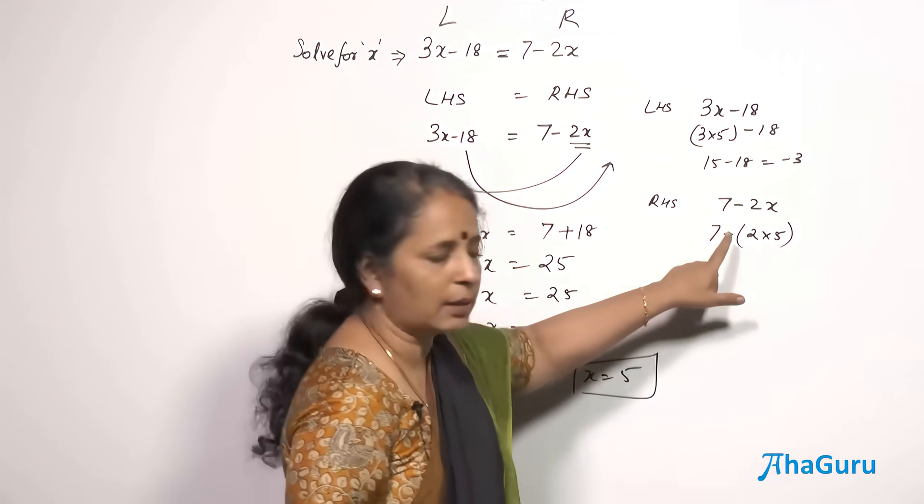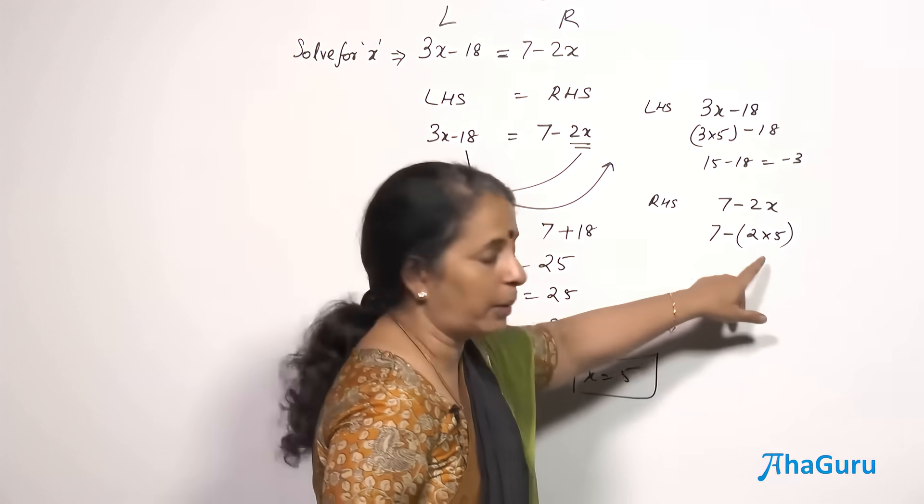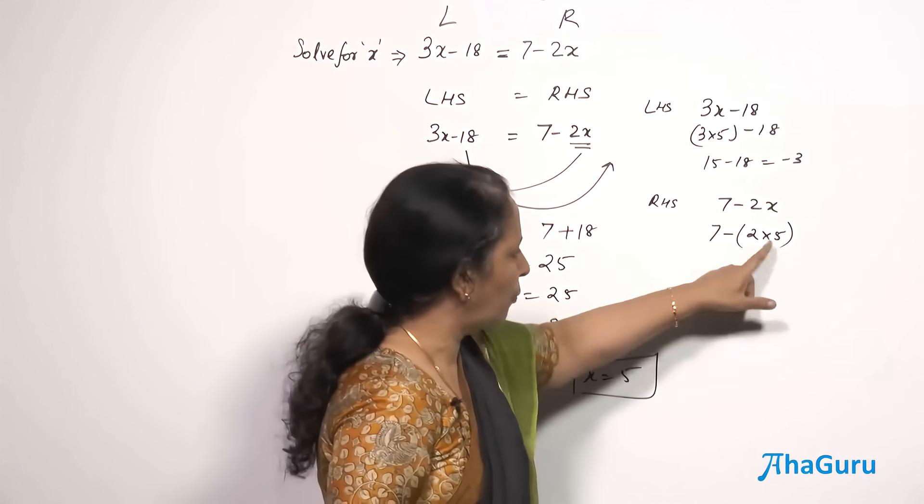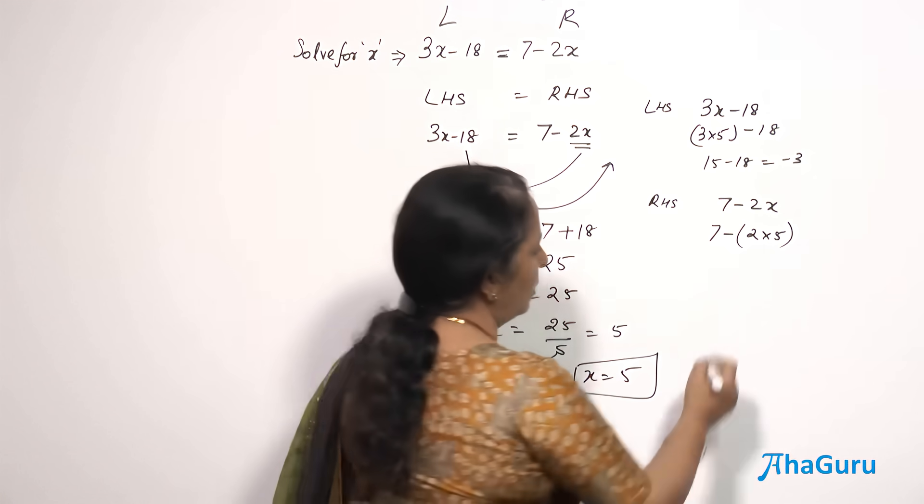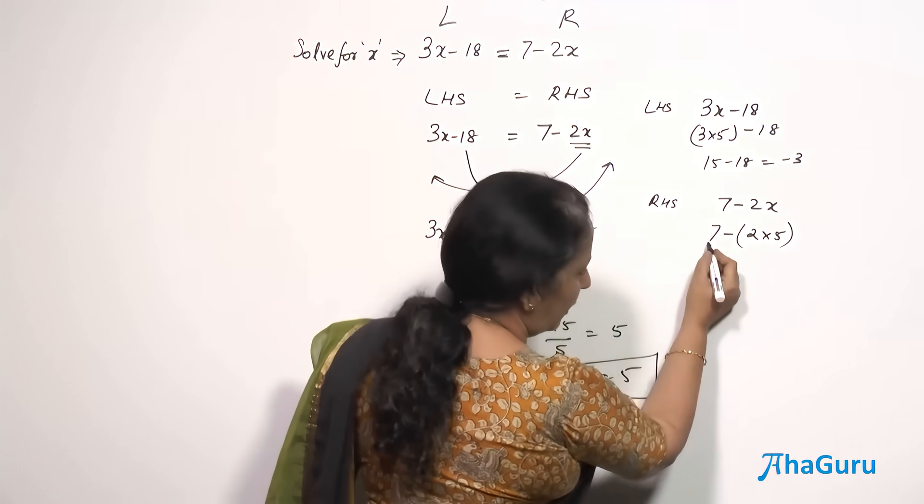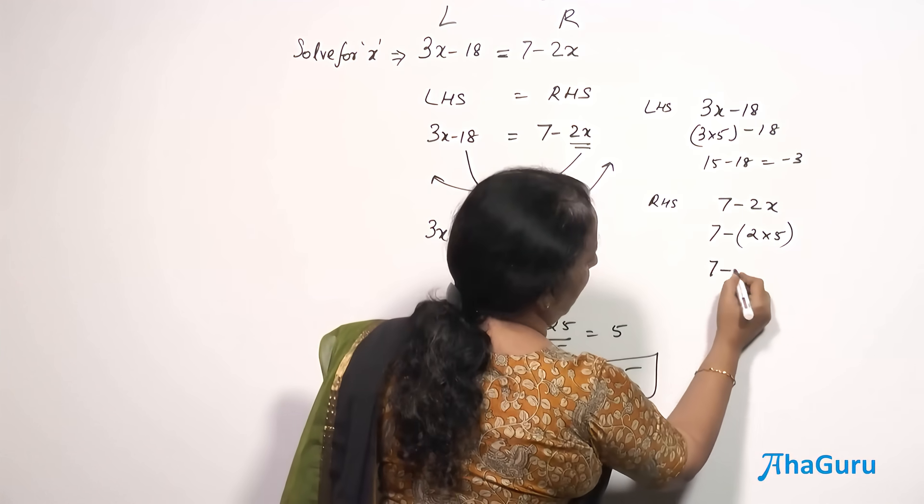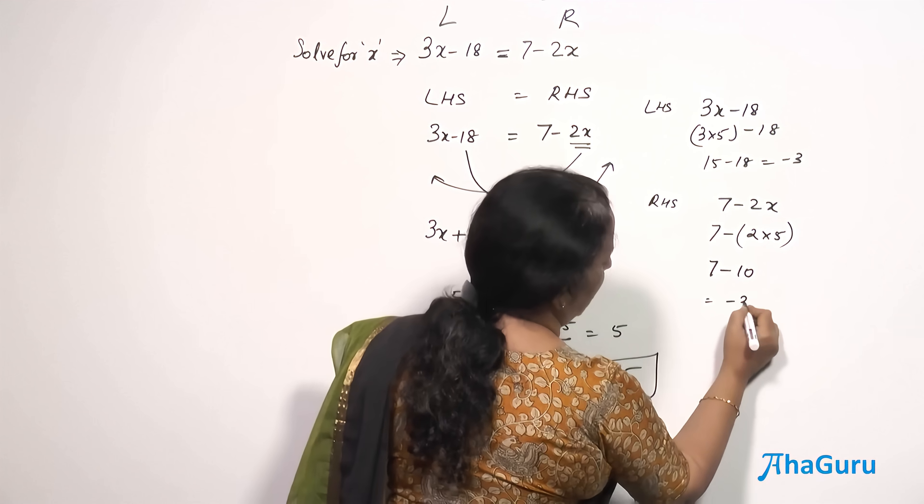2 into 5 will do first and then subtract from 7. Do not do 7 minus 2, the answer will be wrong. 2 into 5 and then multiply it by 7. Sorry, 2 into 5 then subtract it from 7. So 7 minus 10 which is again minus 3.